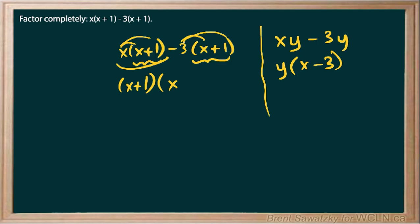x times what gives us this second term? Well, a negative 3. And so we can see that same kind of idea here. And so there's our answer, all factored out there.